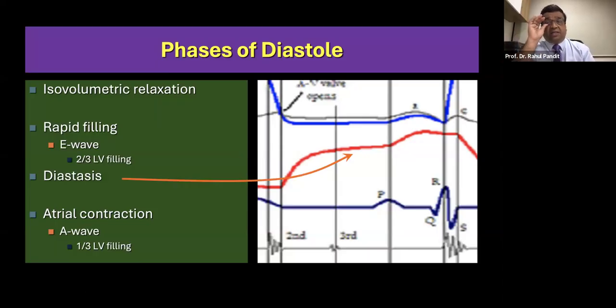This is a phase of diastasis. Now you can see that the pressures have equalized. However, now the atria still has around two thirds of blood or around 25-30% of the blood remaining and that's when the atrial contraction kicks in and rest of the blood flows into the left ventricle.